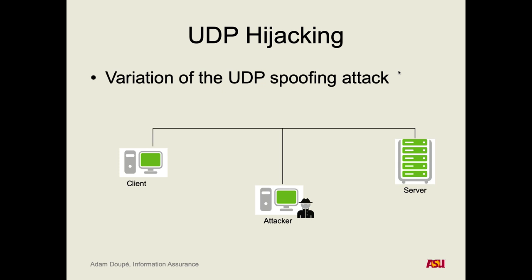Now imagine we want to pull off the attack we just described. The client is making a UDP request for a DNS query: 'what is the IP address of google.com?' We want to be able, as an attacker, to spoof and hijack that reply. Who replies to the request? The DNS server. So the client is asking the DNS server what's the IP address of google.com.